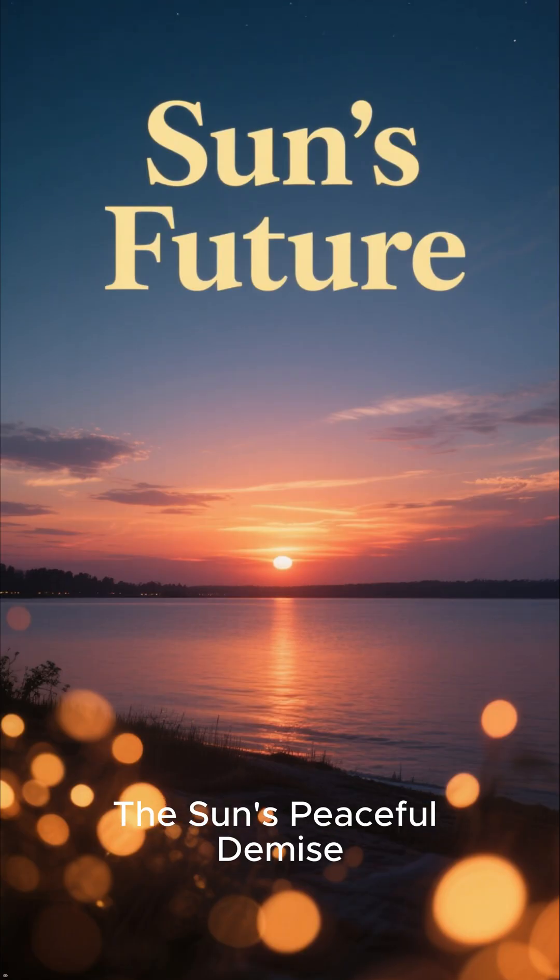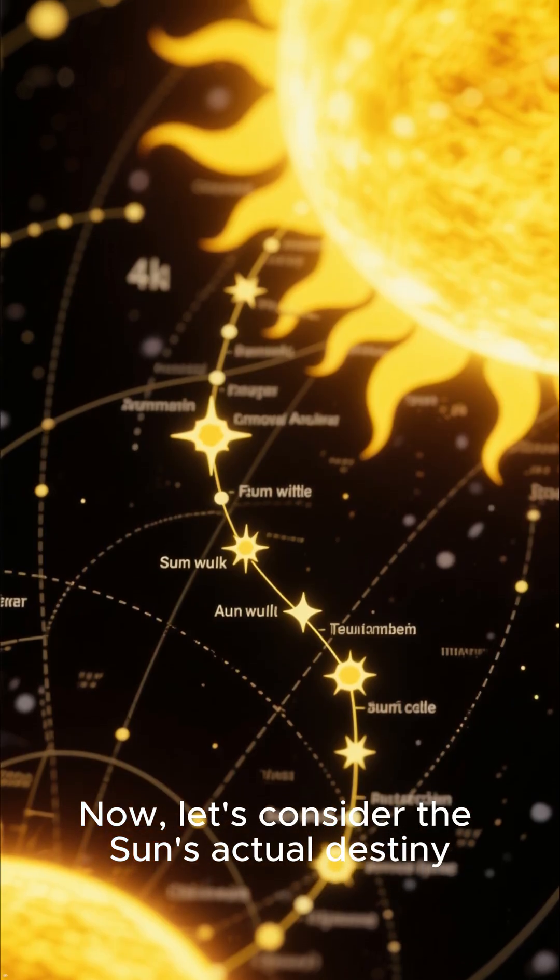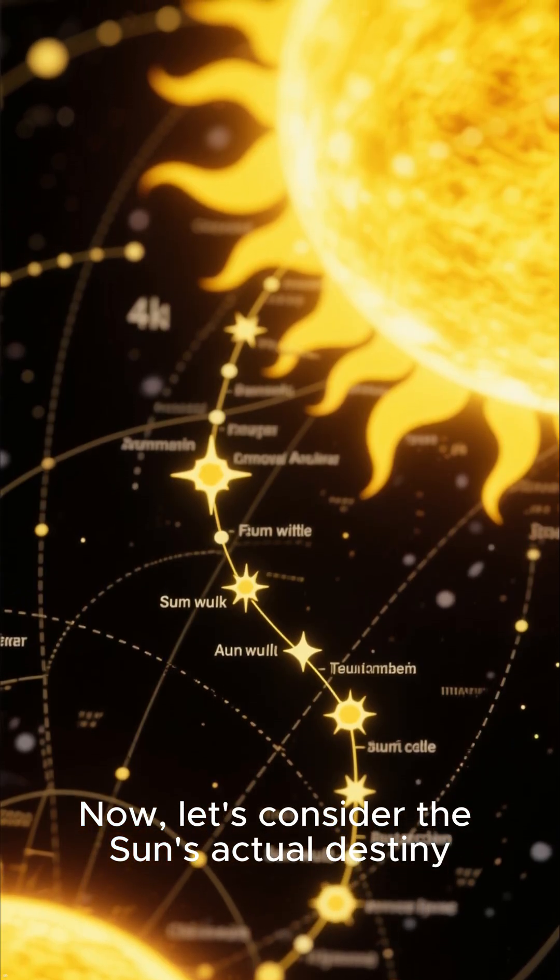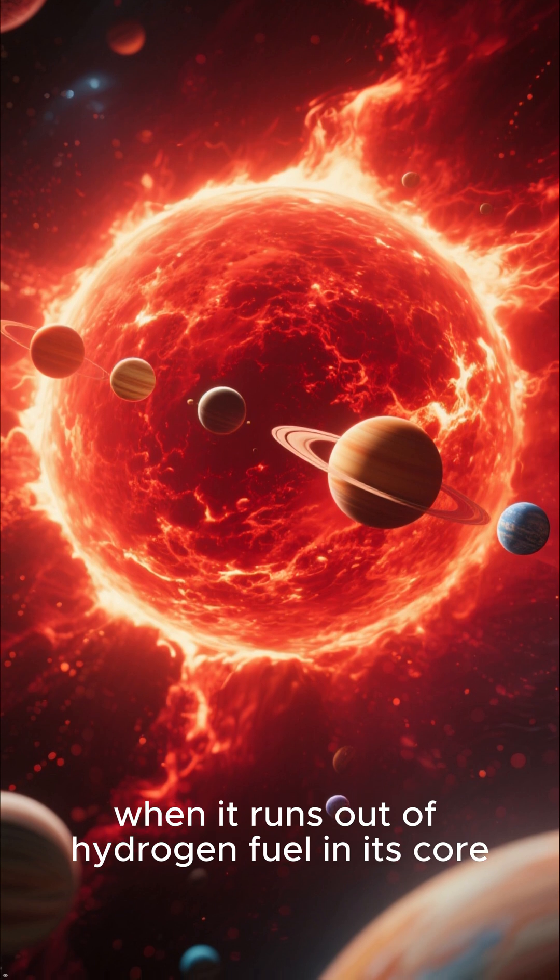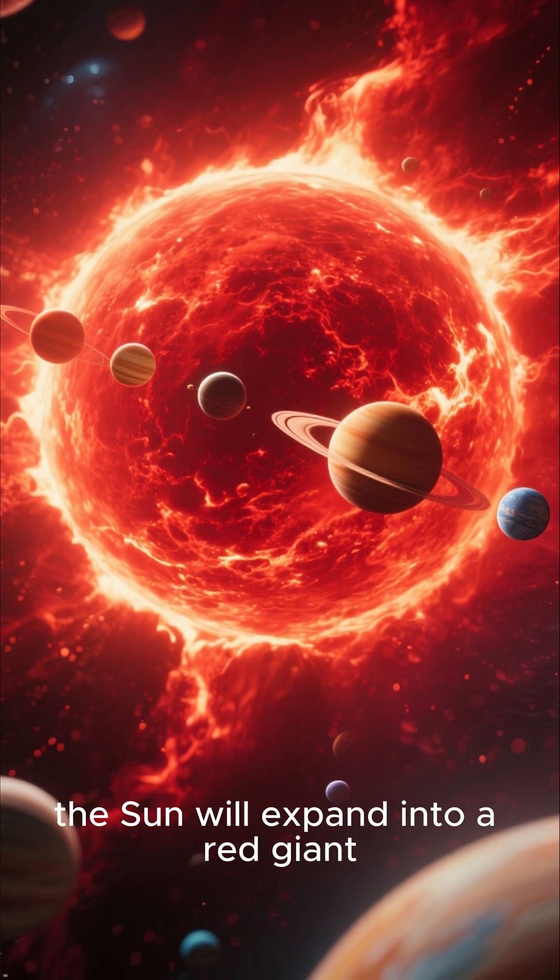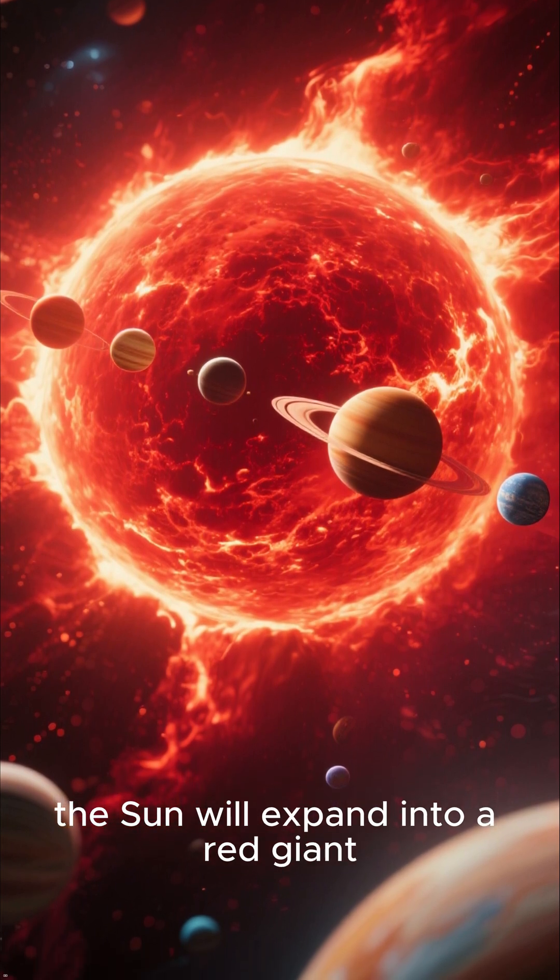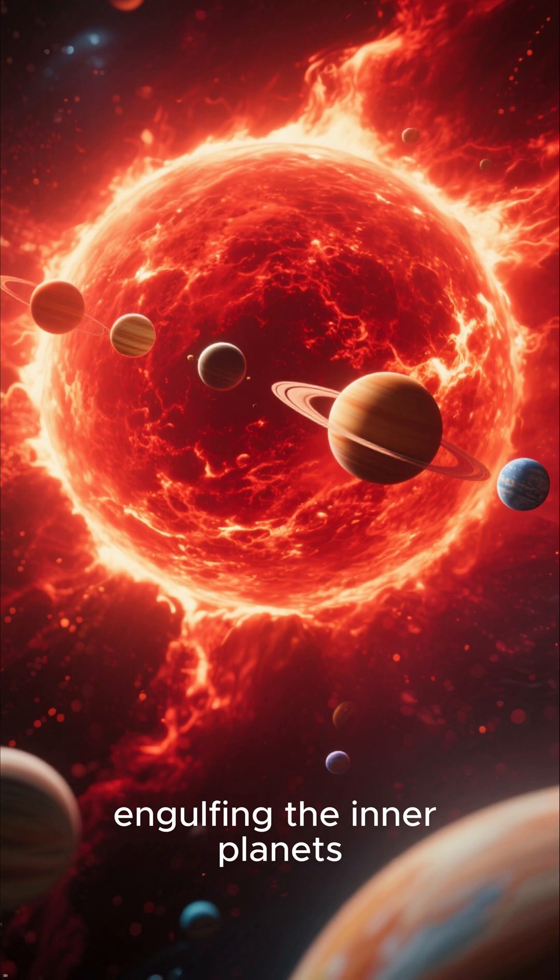The sun's peaceful demise. Let's consider the sun's actual destiny. In about five billion years, when it runs out of hydrogen fuel in its core, the sun will expand into a red giant, engulfing the inner planets.